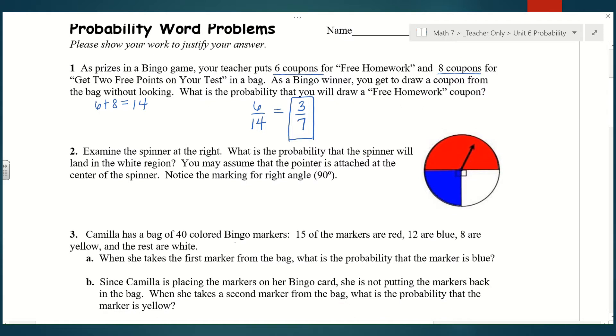Number two, examine the spinner at the right. What is the probability that the spinner will land in the white region? You may assume the pointer is attached at the center of the spinner. Notice the marking for the right angle, 90 degrees. The reason they're telling us that is a right angle is to show that we could split our red section into two. Now looking at the spinner, we can see there's four equal sections, so the white part would be 1/4 of our circle.